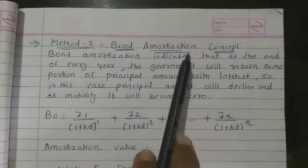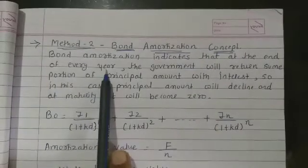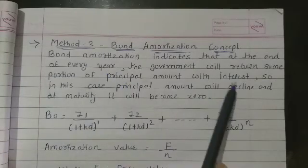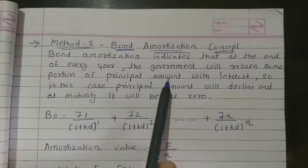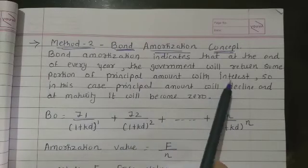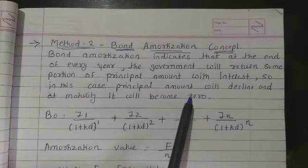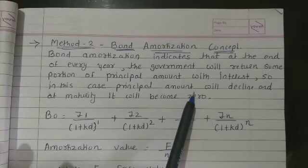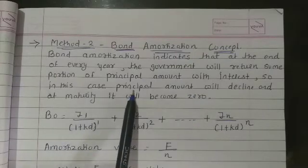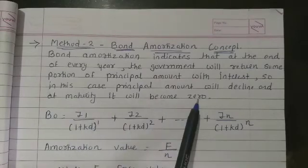But in the bond amortization concept, the government gives interest along with some portion of the principal amount every year. So the principal amount declines every year — in the first year some portion of principal plus interest is deducted, so in the second year the principal decreases further, and so on. The result is that the principal amount declines each year and at the end of maturity the principal amount is zero.